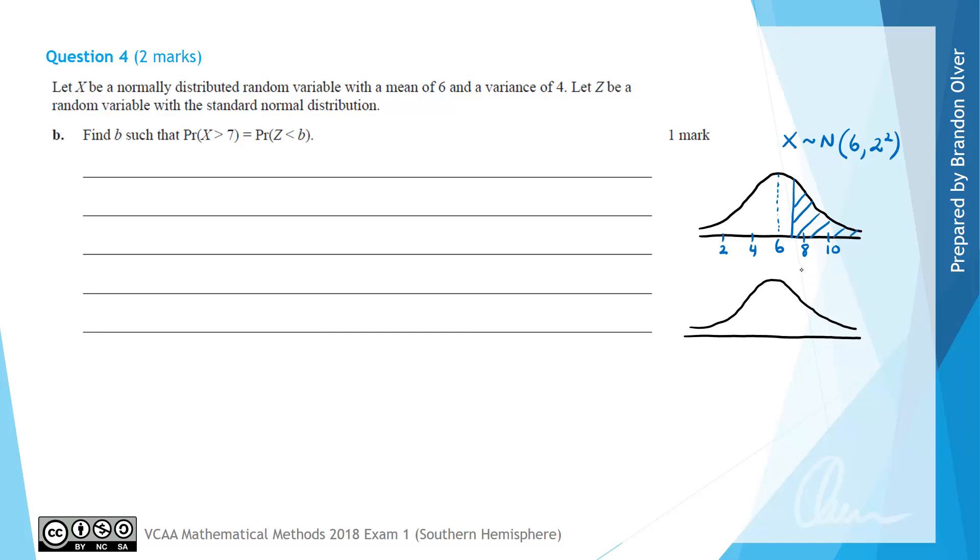On our next bell shaped distribution, we know that this is Z and it is normally distributed with a mean of 0 and a variance of 1 or a standard deviation of 1. So this mean value here is going to be 0, and then this would be 1 and 2, and this would be minus 1 and minus 2. We need the probability that Z is less than B to be equal to the probability that X is greater than 7. So by symmetry we can see that this region here would be the region that we are after, so B will be this number just here.